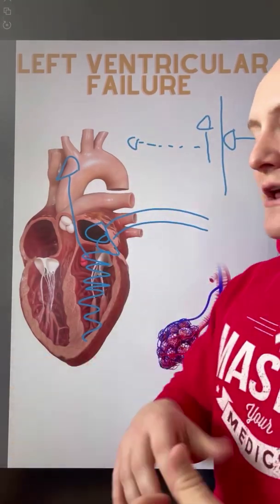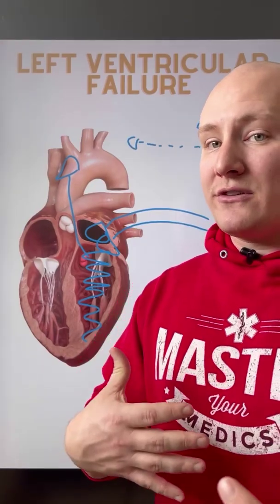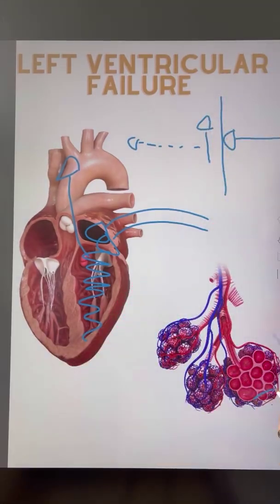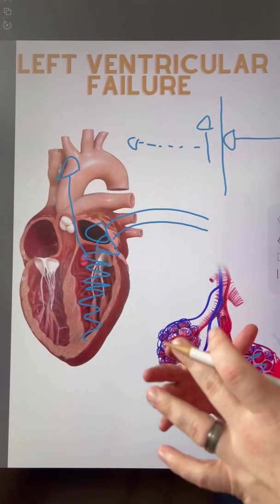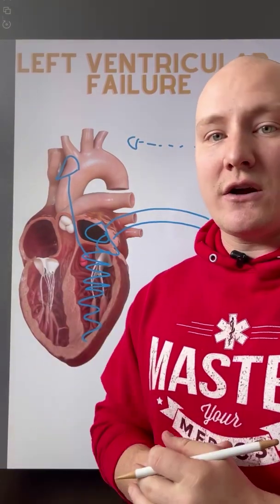And with pressure and fluids, it always takes the path of least resistance. And the path of least resistance is going to be the alveoli, creating pulmonary edema and fluid accumulation in that area.